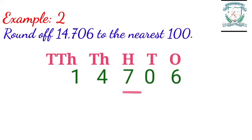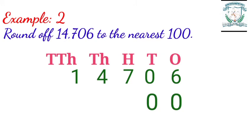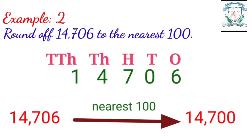Here 06 is less than fifty, so the hundreds place digit remains the same and the digits in ones and tens places will become zero. When we round off 40,706 to the nearest hundred, we get 40,700.